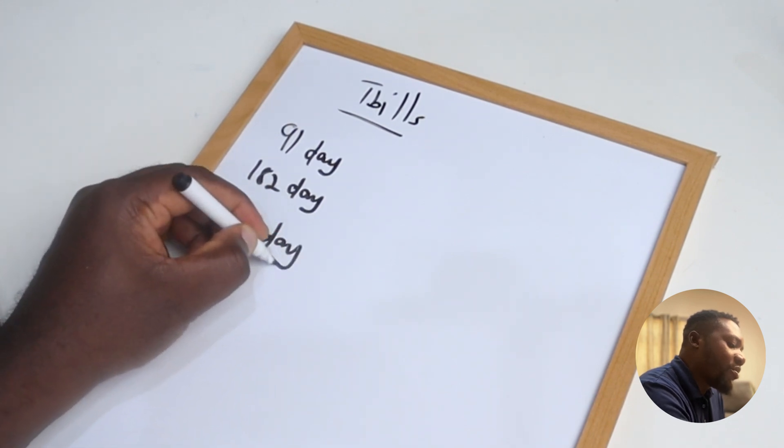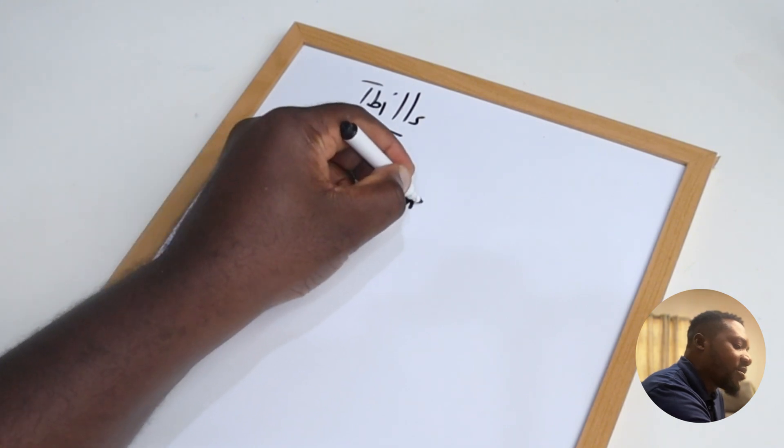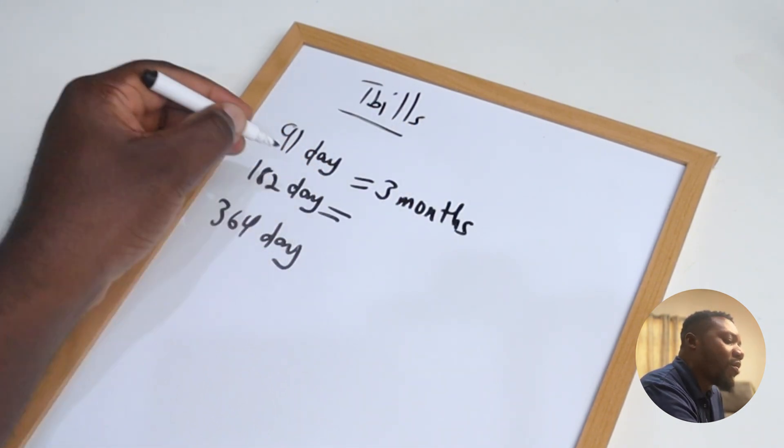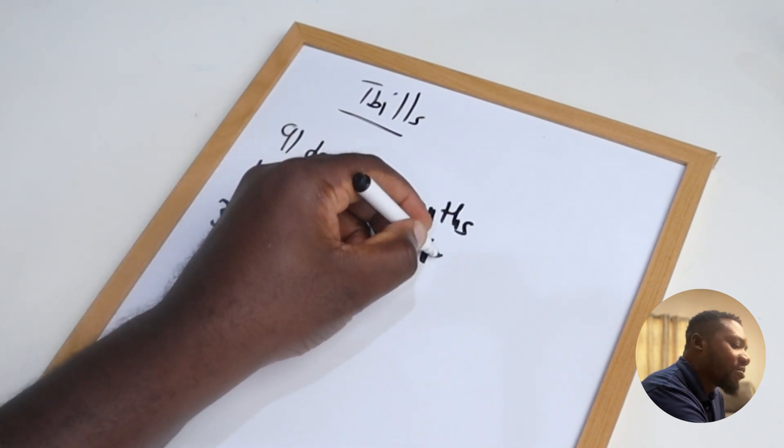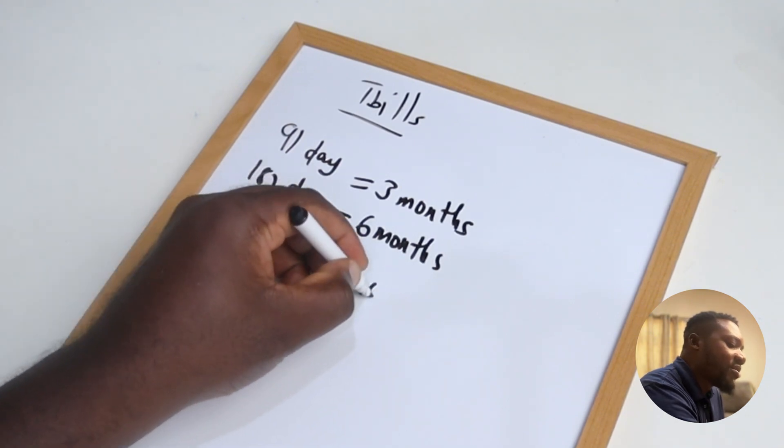Now this 91 day represents three months. 182 day represents six months, and then a 364 day represents 12 months.